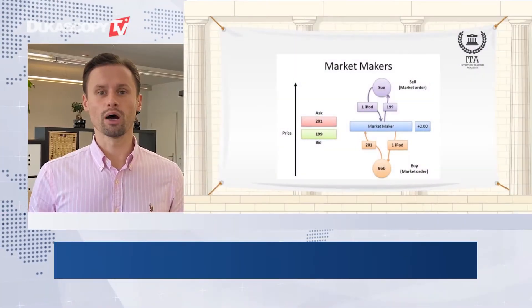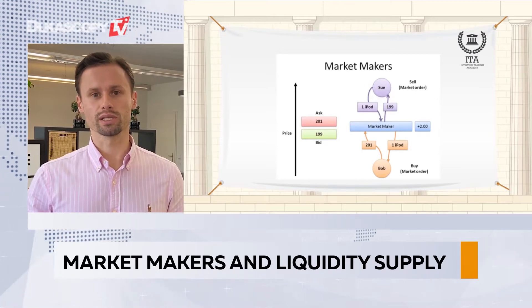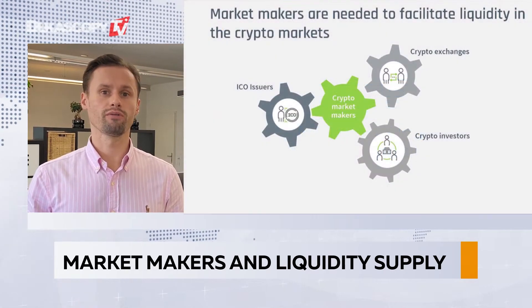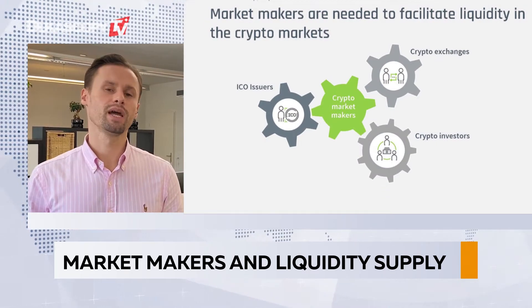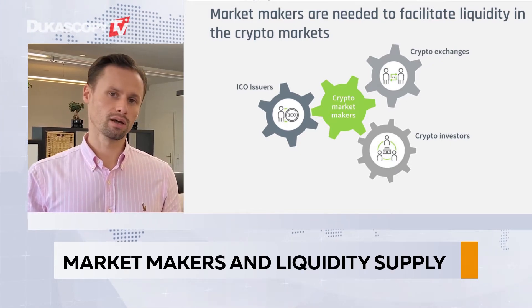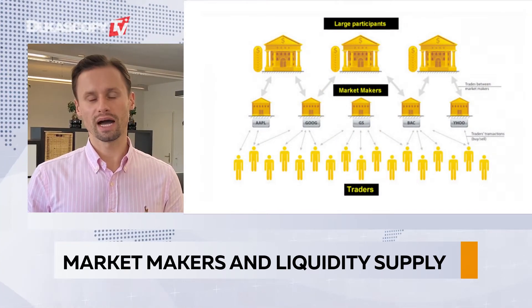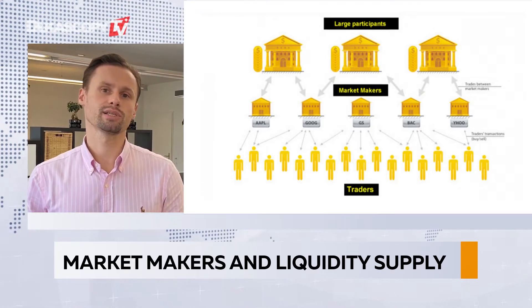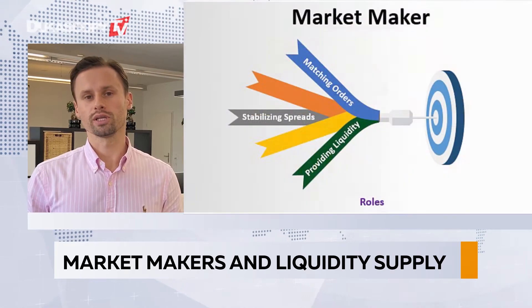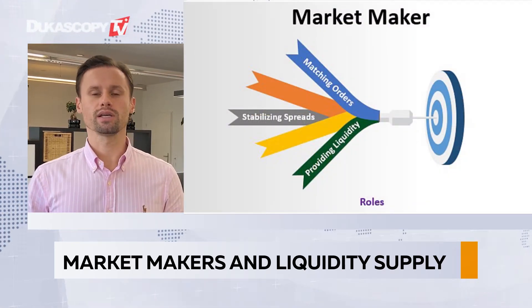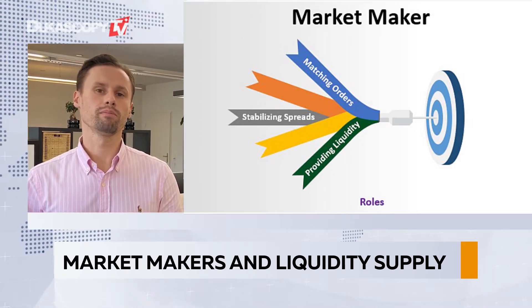Before we explain automated market making protocols, let's explain what market making is. The key term here is actually liquidity. Liquidity is a very important feature of any financial asset, and it describes the ability to easily buy or sell an asset without drastically changing the price. Liquid assets are less risky and more attractive for end investors. A market maker is a company that quotes buy and sell prices for a digital asset, using either their own capital or capital from other investors to provide liquidity.